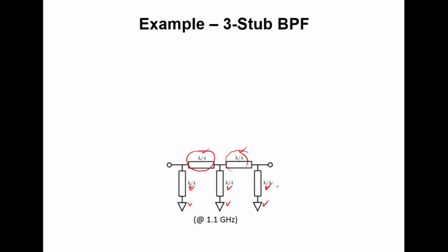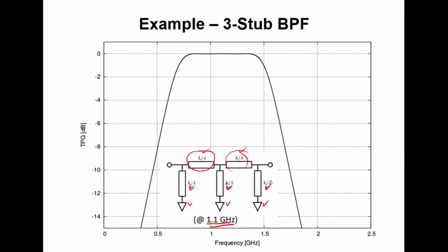So in this particular case, I've chosen 1.1 gigahertz as the center frequency, so that specifies how long each one of these stubs is because these are all lambda by 4. And then when I look at the resulting TPG it looks like this. So here's 1.1 gigahertz, that's the design frequency, and we see that we in fact get a nice flat bandpass and that it rolls off as you'd expect.